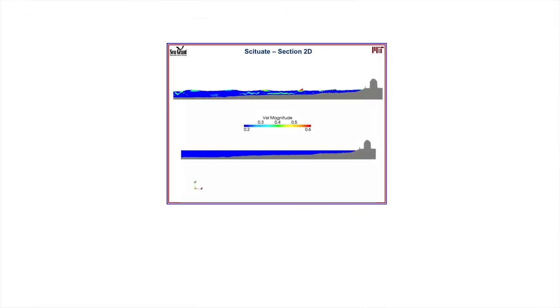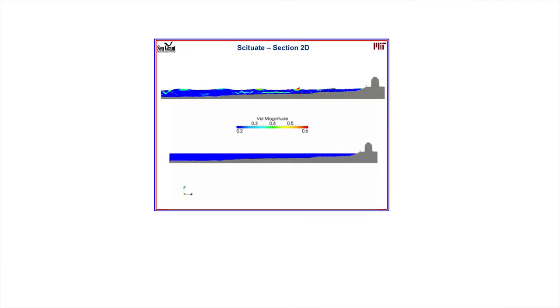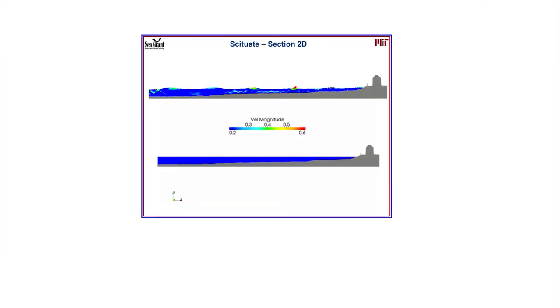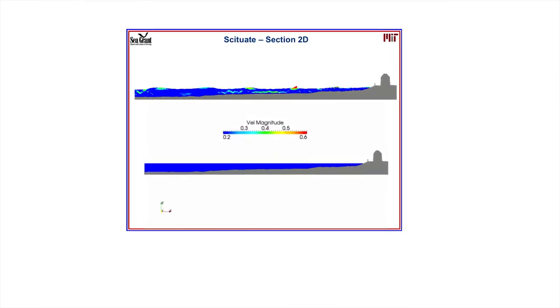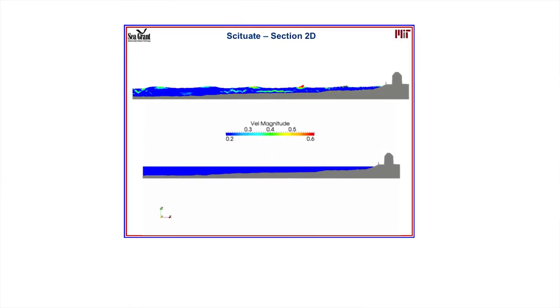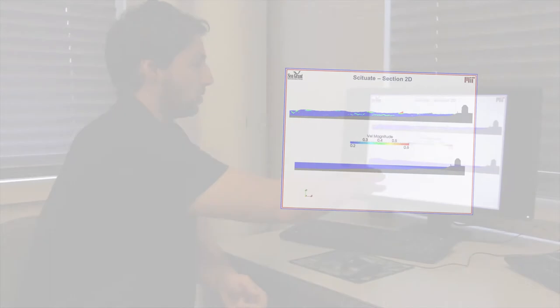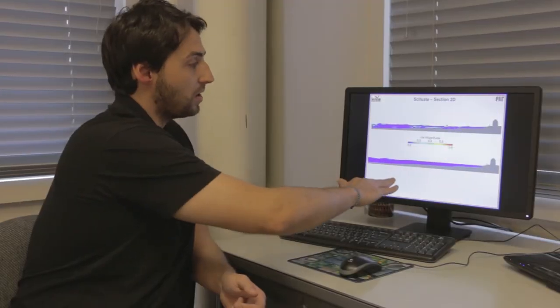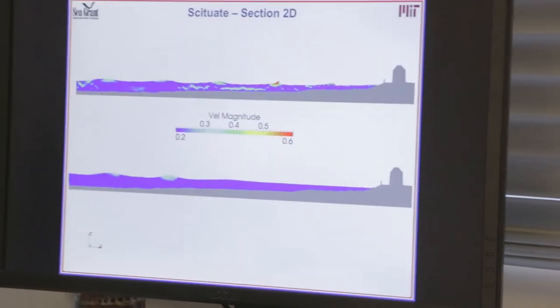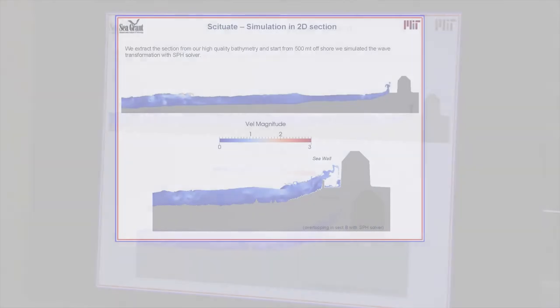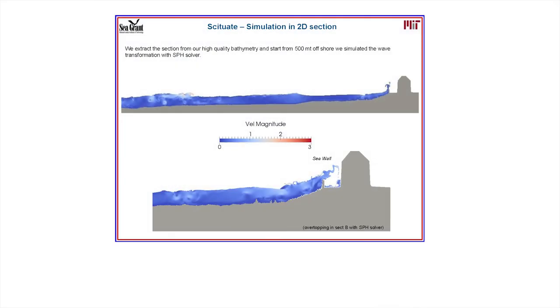We decided to cut our bathymetry in 2D sections and we started to reproduce the wave propagation in these different sections. We start from 500 meters from the coastline and simulate the wave propagation in normal conditions and then reproduce the wave during the storm. When we reproduce the wave during the storm, we find different overtopping phenomena and flooding phenomena in this region.